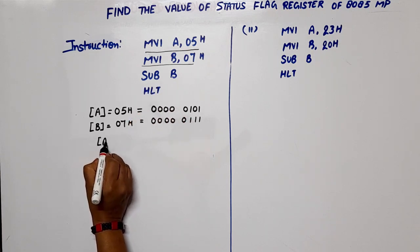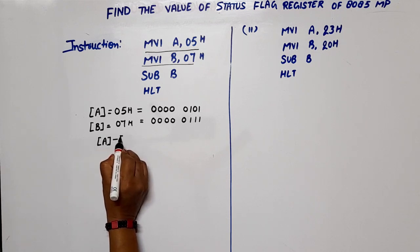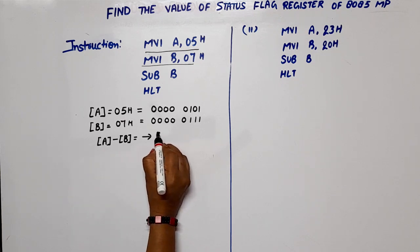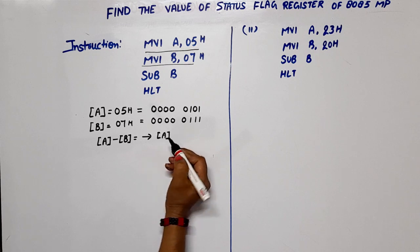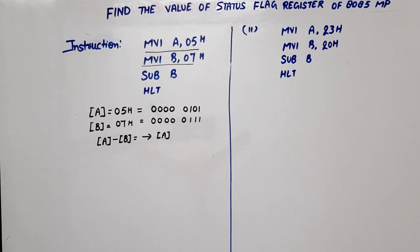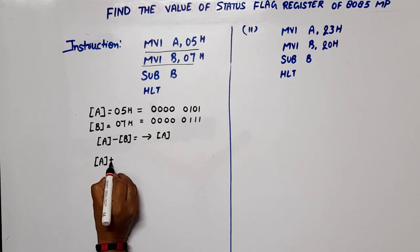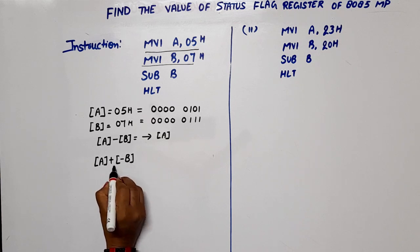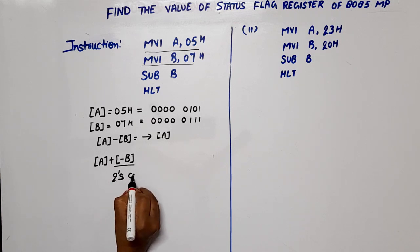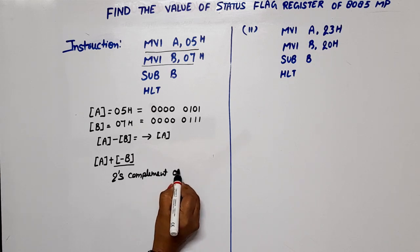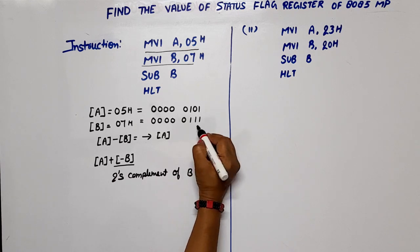The instruction SUB B will subtract the content of B from the content of A, and the result is saved in the accumulator. In a computer system or microprocessor, subtraction is performed in the form of addition — basically A plus minus B — where minus B is the two's complement of B.